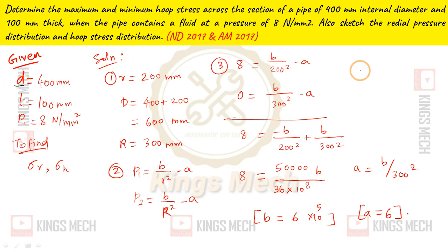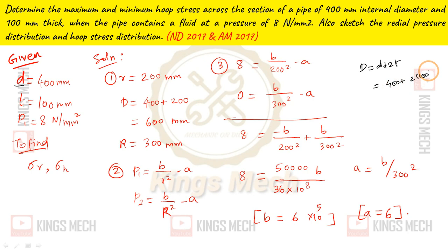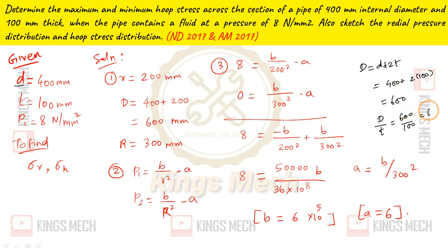So, small d is given. We find capital D, which is equal to small d plus 2t. Capital D = 400 plus 2 into thickness 100, so 400 plus 200 = 600. D by T = 600 divided by 100 = 6, which is less than 20. So, thick cylinder is confirmed.